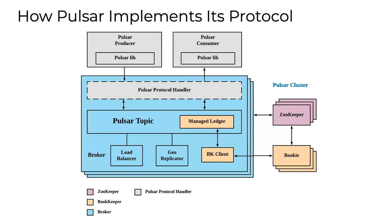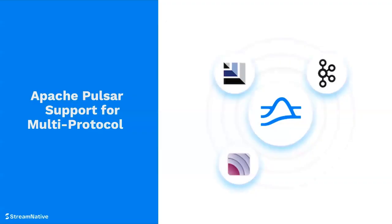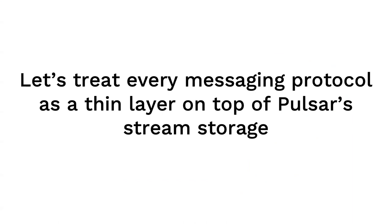That's the basic model every messaging system used, including Pulsar originally — we're all guilty of that same design. Then we thought about how to support different messaging protocols. We have the stream storage; the protocol is really just a thin layer on top. Can we write our own thin layers or different layers to make it work? Let's just treat every messaging protocol as a thin layer on top of our stream storage.